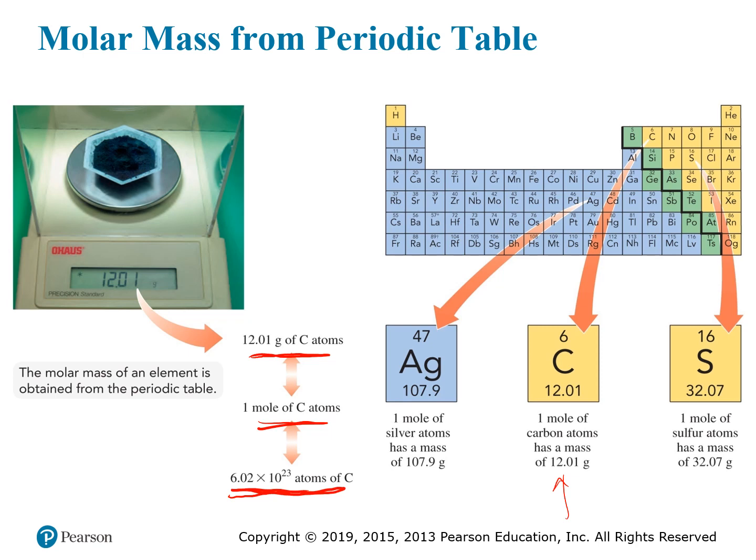Of course, that's not the way we usually do it — we don't count atoms. Instead, we weigh things out by mass first, and then use the molar mass to backtrack and figure out how many actual moles or particles that represents.